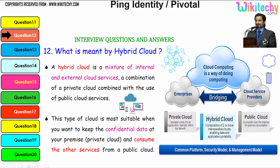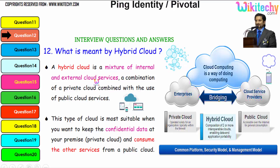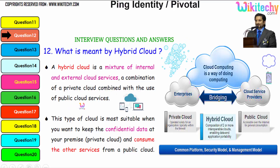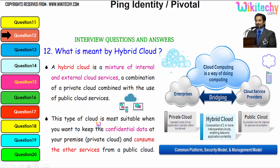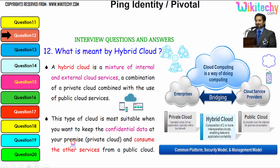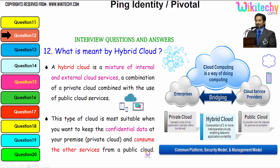By definition, a hybrid cloud is a mixture of internal and external cloud services — a combination of a private cloud combined with the use of public cloud services. This type of cloud is most suitable when you want to keep confidential data at your premises and consume other services from a public cloud.